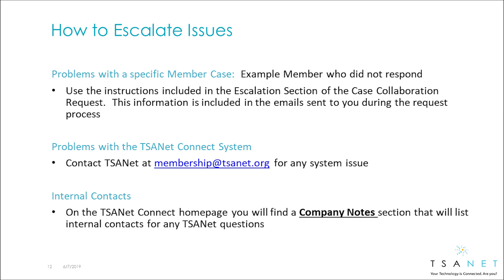Three types of issues may arise that you need to escalate. The first is a problem with a specific case — use the escalation instructions that are included in all emails. For any type of system issue, contact TSAnet.